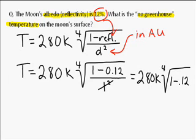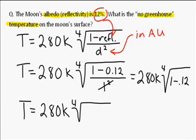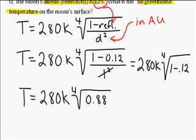Alright, let's rewrite this again, simplify one more time. 280K times the fourth root of 1 minus .12 is 0.88. Okay, let me scroll down, get a little more room here.